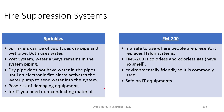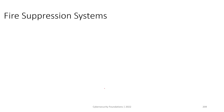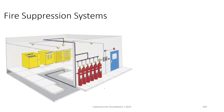FM 200 is the preferred option for IT environments. It is a colorless, odorless gas that leaves no residue, is safe on IT equipment, and does not damage the ozone layer. Halon gas, by contrast, had a damaging effect on the ozone layer. FM 200 is what we use in IT, and it comes in cylinders.